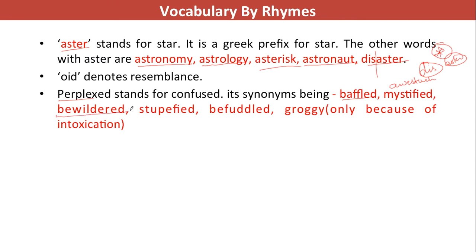How is stupefied different from bewildered? For example, 'I'm bewildered whether I should buy a blue shirt or a green shirt.' These are two different situations where we use two different words. Beveled means to become unable to think clearly — similar to stupefied. Groggy is when you're intoxicated and thus not able to think or apprehend properly.